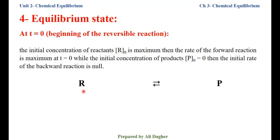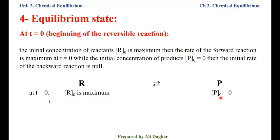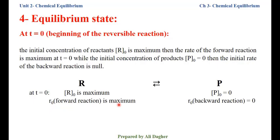For this reversible reaction at T equals 0: the concentration of reactants is at its maximum initial concentration, while the initial concentration of products equals 0. Therefore, the initial rate of the forward reaction is maximum, while the initial rate of the backward reaction equals 0.